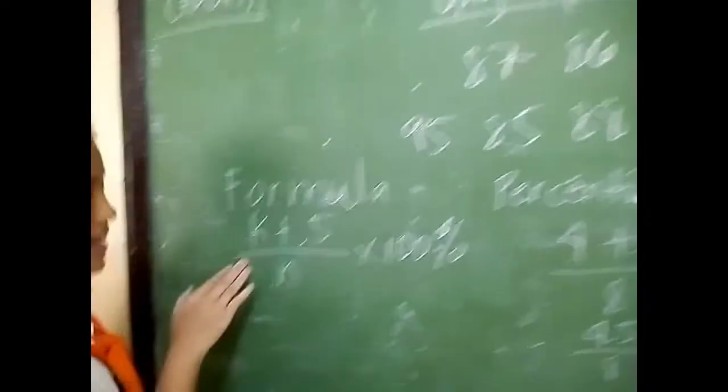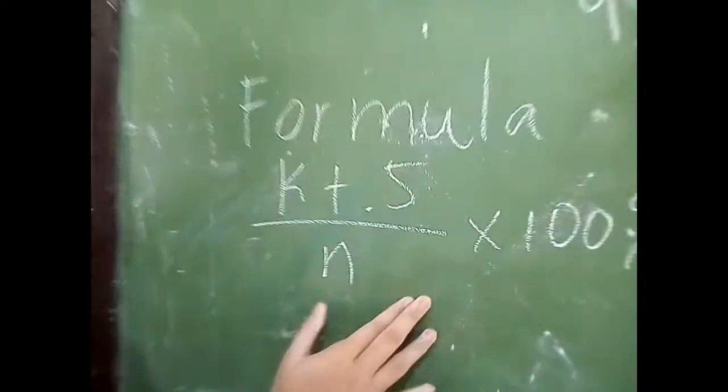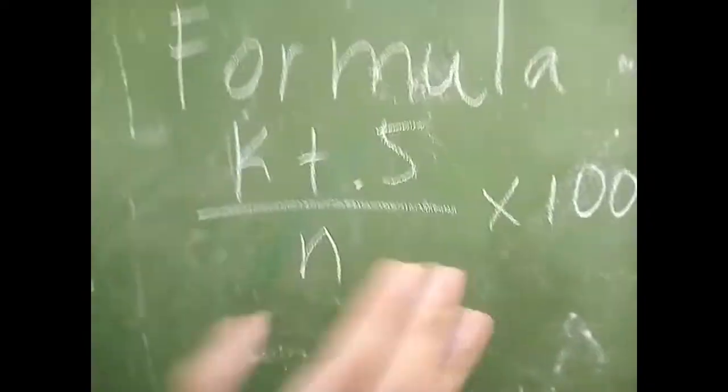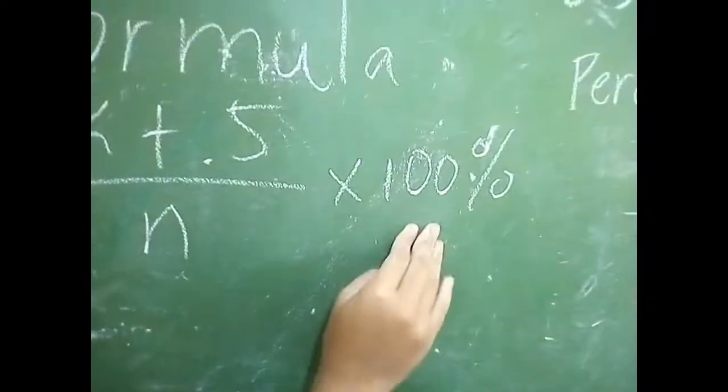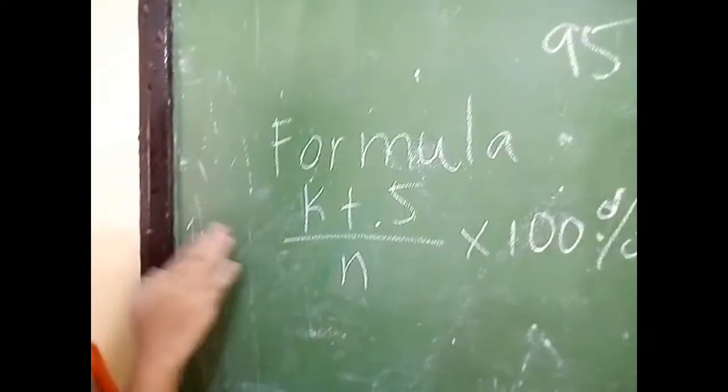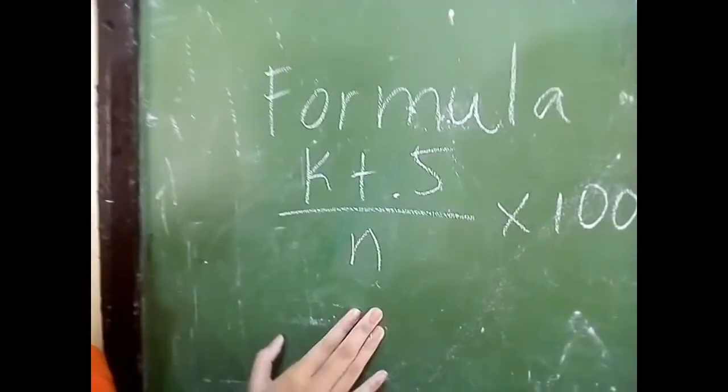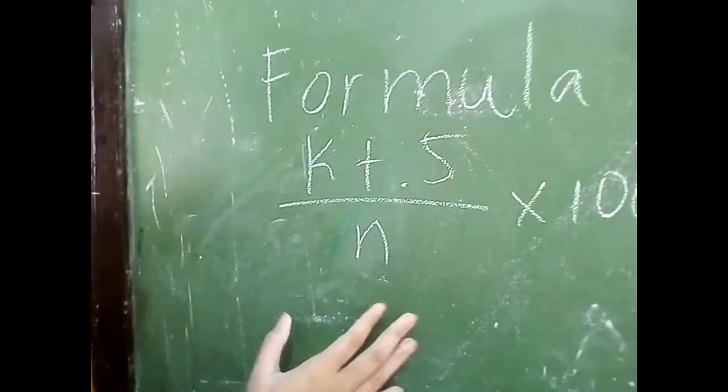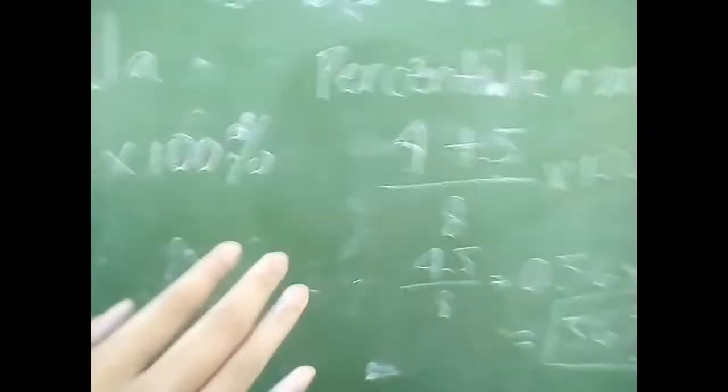Here is the formula for percentile rank: K plus 0.5, divided by N, times 100%. The K is the number of values preceding the score, and N is the total frequency.